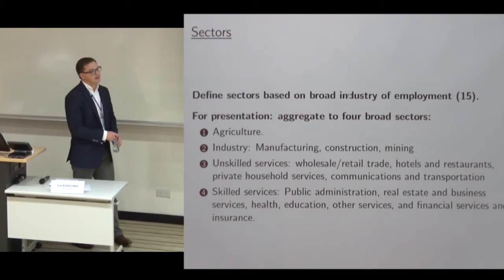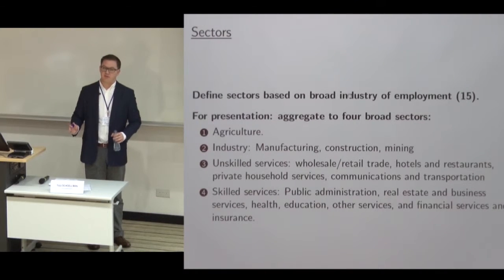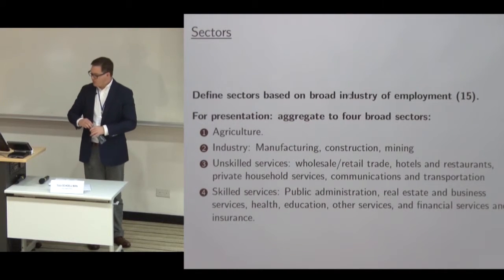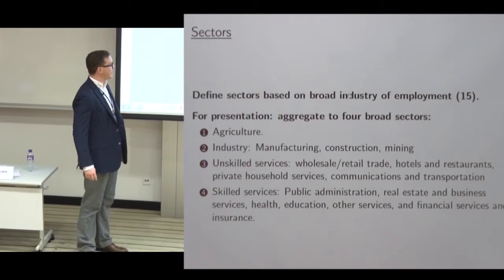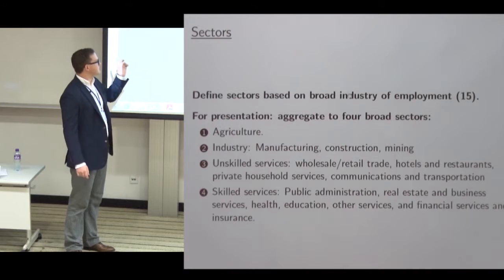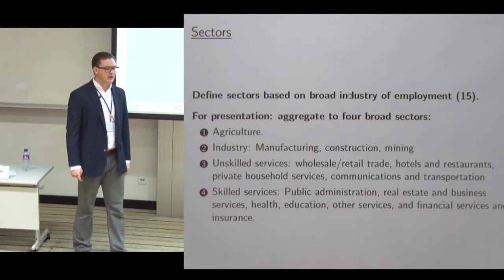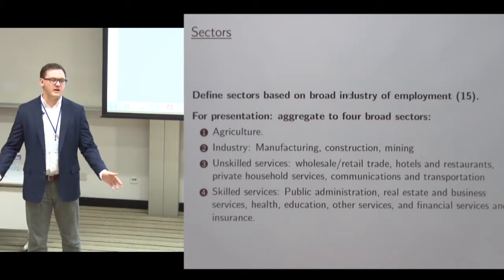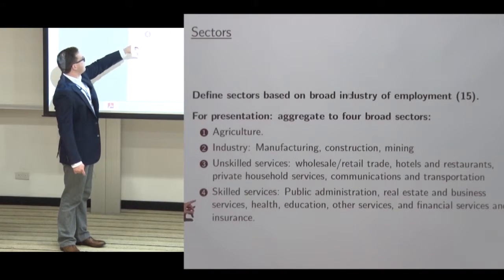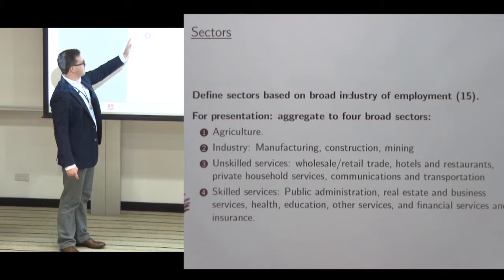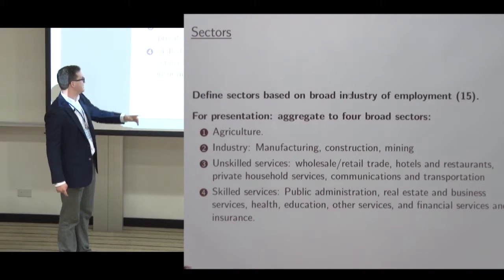We have to study data in terms of sectors. To do everything comparably between the US over time and across countries, we're restricted to 15 sectors. For presentational purposes we aggregate to four sectors: agriculture (farming, forestry, fishing), industry (manufacturing, construction, mining), and the usual service sector cut in half. We split services because when you talk about human capital and skills, services has a tremendous amount of heterogeneity. We cut services basically on average years of schooling — unskilled services includes wholesale retail, hotels, restaurants, and maids; skilled services includes public administration, health, and education.